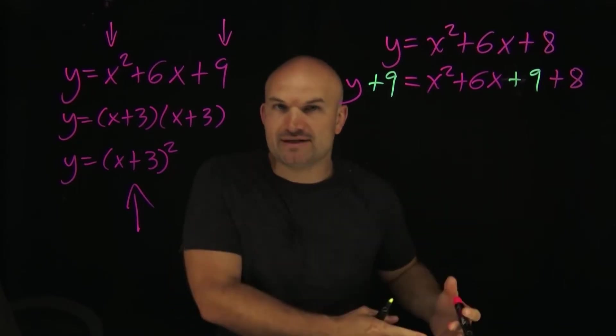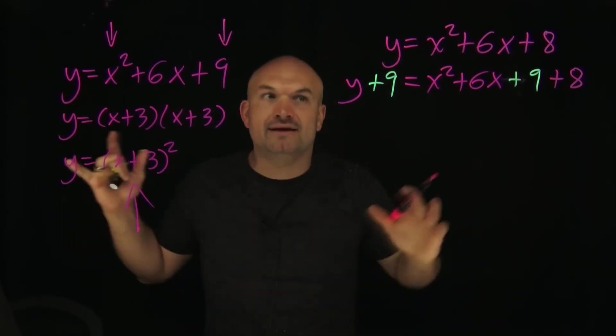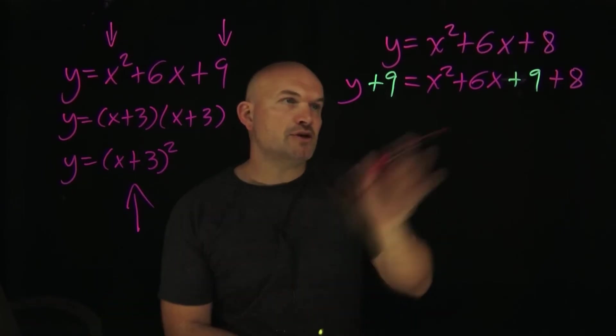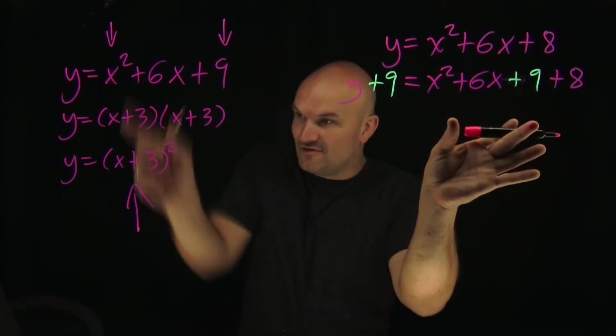If you have an equation, as long as you're doing one thing to one side and you're doing the same thing to the other side, it's going to be okay—you're still keeping an equivalent equation.